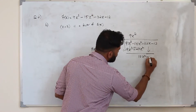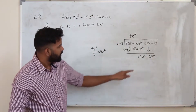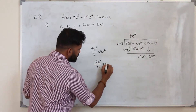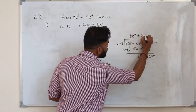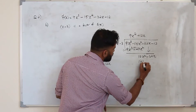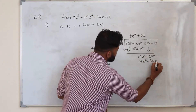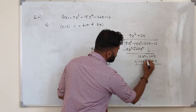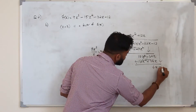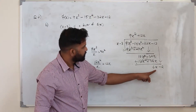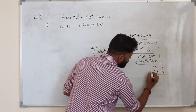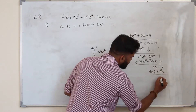Repeat the process: take 12x squared, divide by x to get 12x — the next term of the quotient. Multiply 12x by both terms to get 12x squared minus 36x. Invert the signs and subtract: minus 32 plus 36 gives 4x. Bring down minus 12. Divide 4x by x to get 4. Multiply 4 by both terms to get 4x minus 12, which cancels exactly. The remainder is 0.